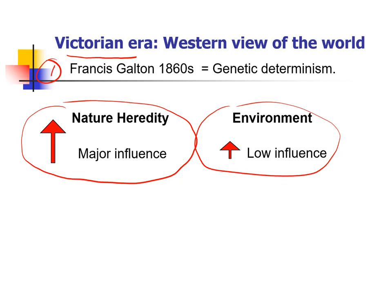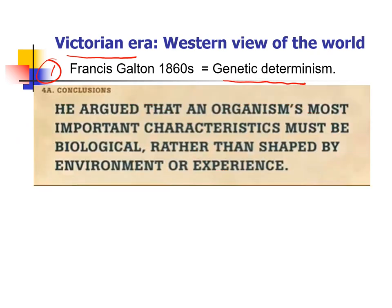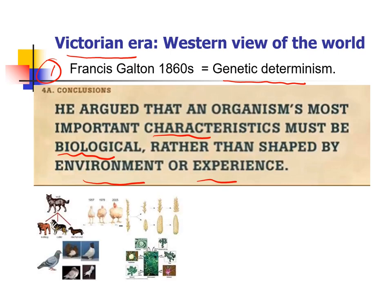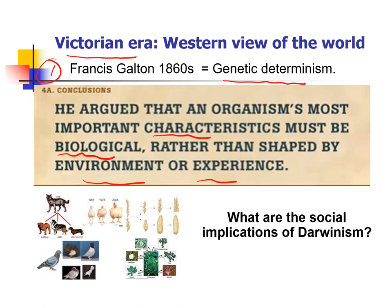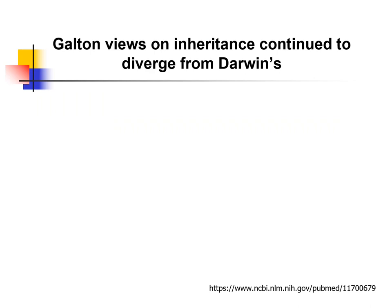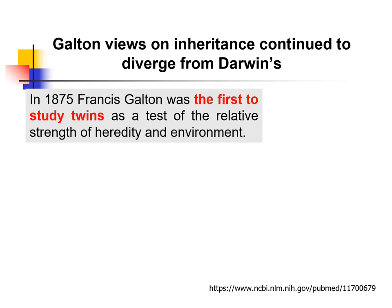To summarize, Galton had a very deterministic view of genetics. He thought that characteristics in biology must be shaped by genes rather than the environment or experience — very characteristic of this western school of thought. He asked: what are the implications of Darwin's ideas for our society? And Galton's ideas started diverging from Darwin's. One example of that is the study of twins, which clearly showed the personality of Galton — he was a pioneer, the first to study twins to measure the relative strengths of heredity and environment.